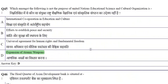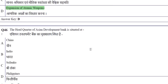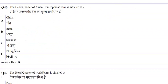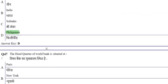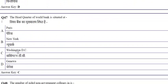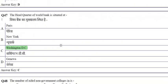The headquarter of the Asian Development Bank is at Manila, Philippines. The headquarter of the World Bank is at Washington DC — please remember this very important question.